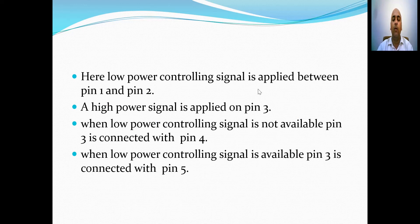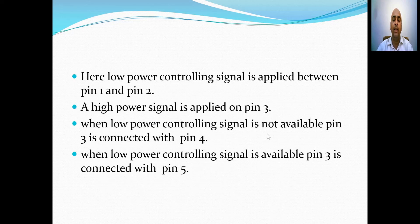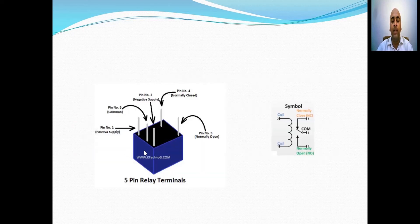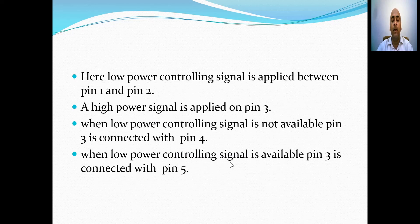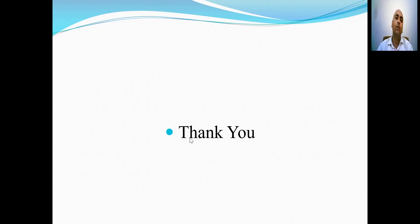A low-power controlling signal is applied between pins 1 and 2, and a high-power signal is applied on pin 3. When the low-power controlling signal is not available, pin 3 is connected with pin 4 — the normally closed pin. When the low-power controlling signal is available, pin 3 is connected with pin 5. These were some of the components discussed in this class. Thank you very much.